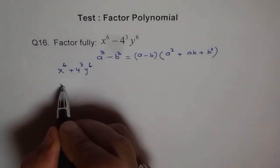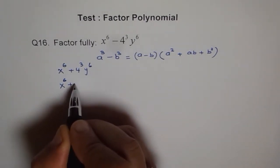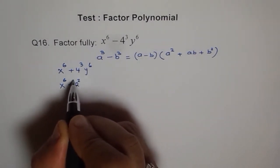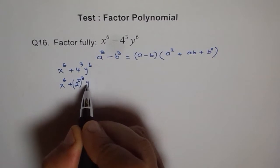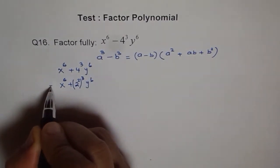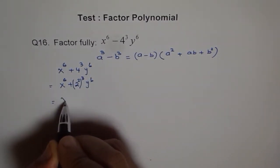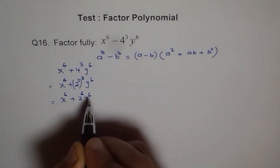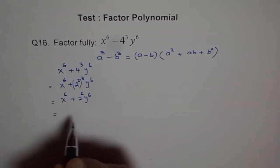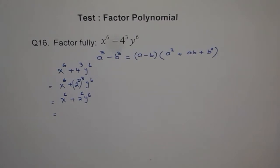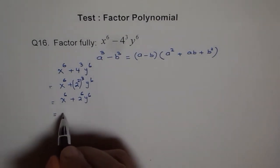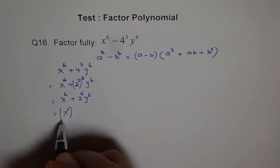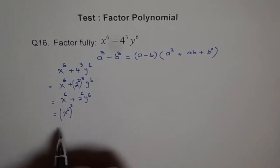On the side, I can write this as: a to the 6th, with 4 as 2 square cubed, and y to the 6th. This gives us x to the power of 6 plus 2 to the power of 6 times y to the power of 6. Simplifying further, this could be written as a square cubed form — since 3 times 2 gives me 6.